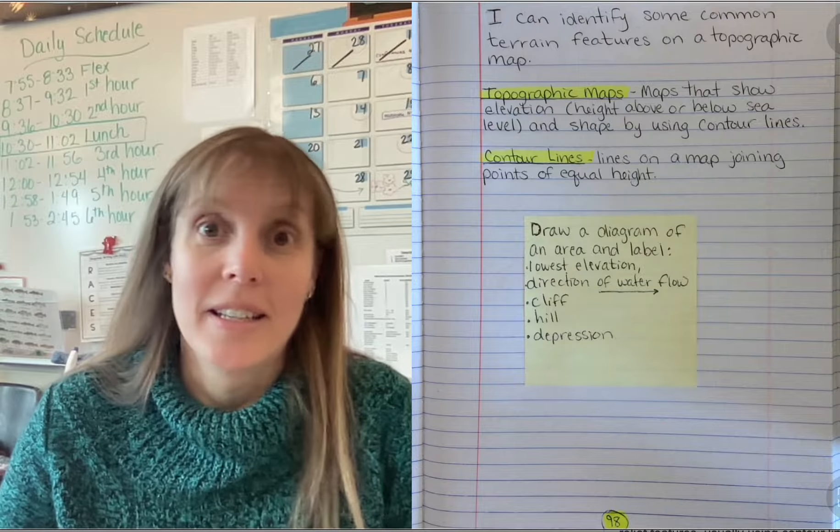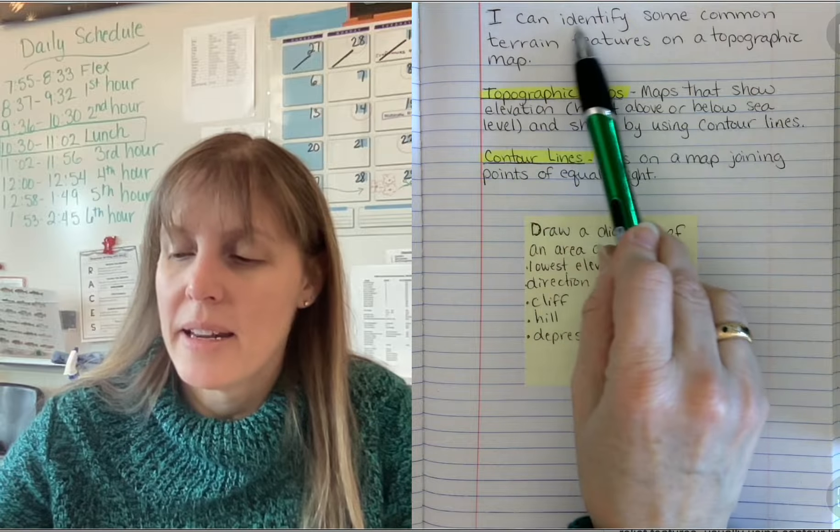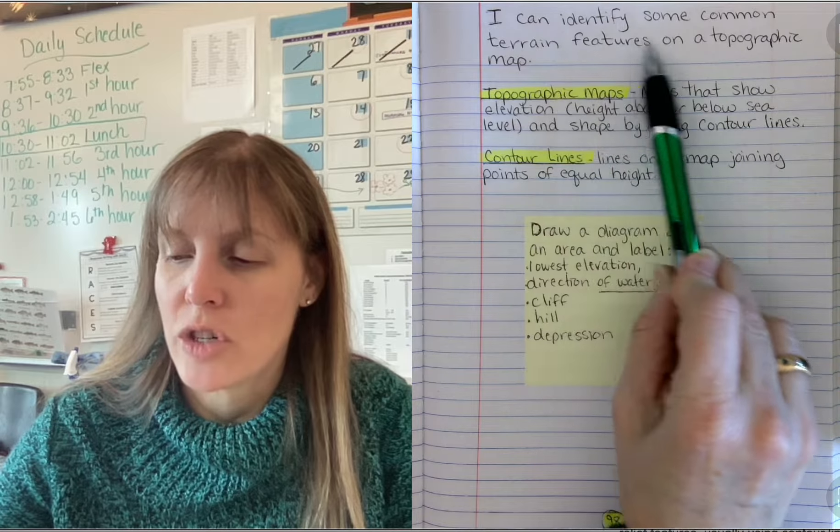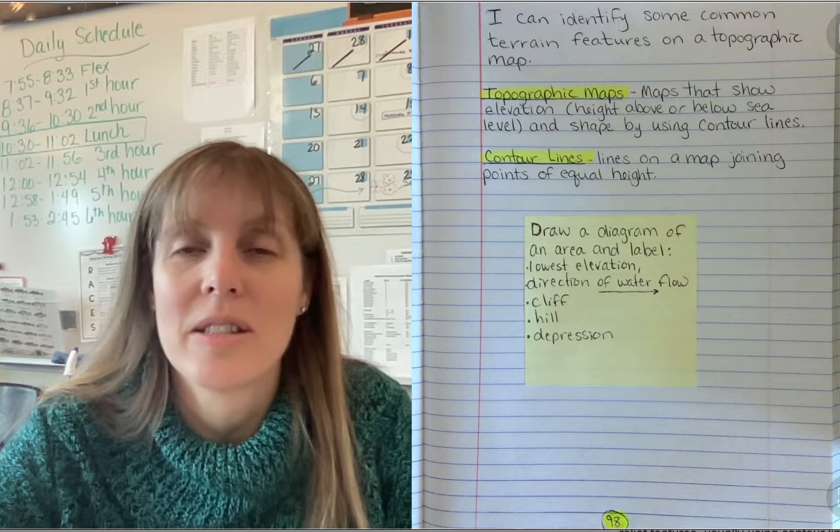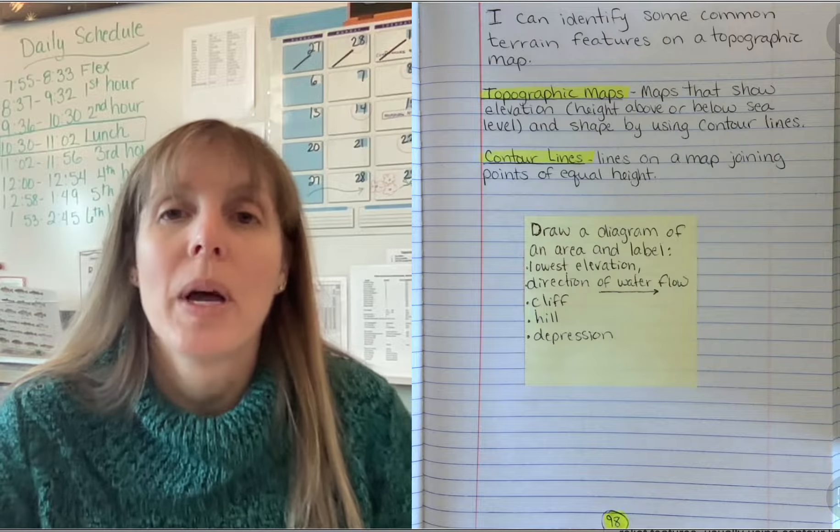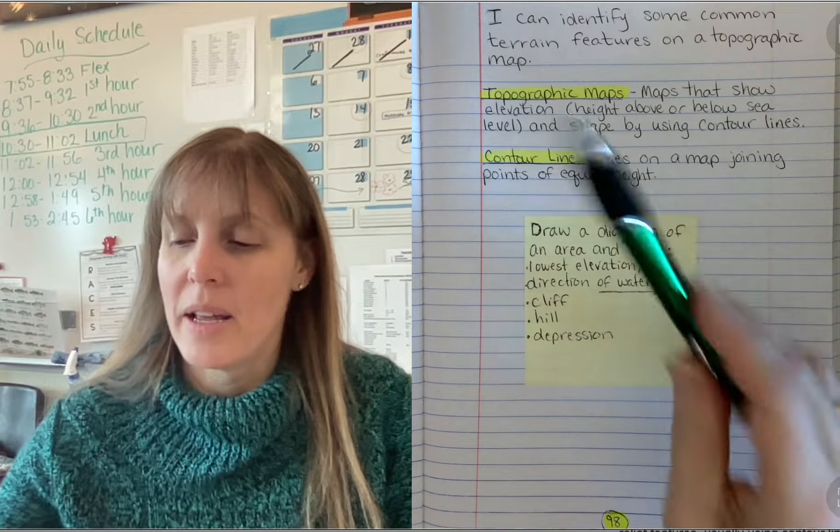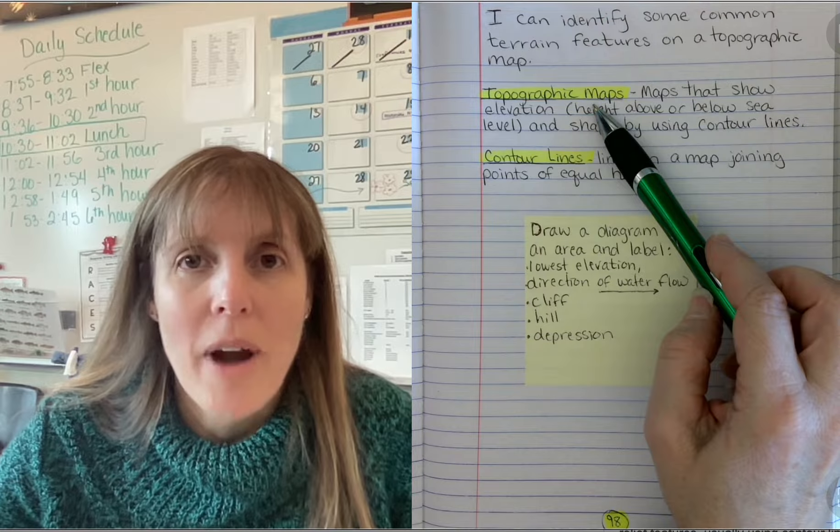So our learning target today and for the following few days is I can identify some common terrain features on a topographic map. Topographic map is sometimes said topographic and sometimes called for short topo map. So our first term is topographic map. Say it with me. Topographic map.